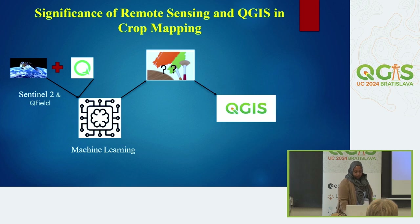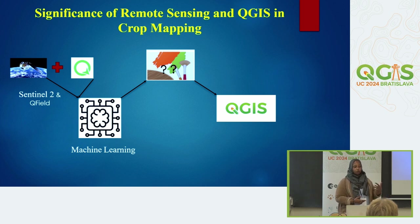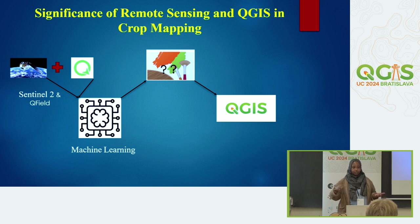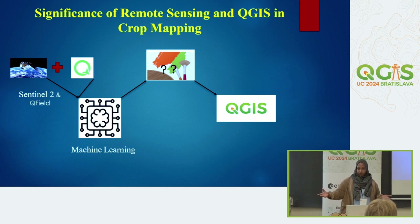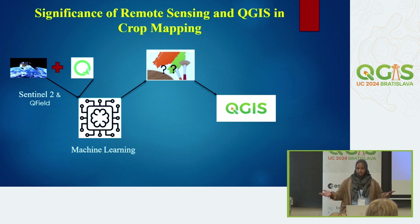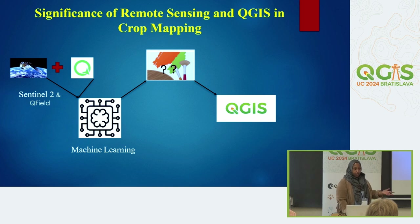I used QGIS for visualization of the data and further analysis, and also for validation. I had another remote sensing-derived product from a different source to compare against, because I didn't have actual crop maps from the field. I had to use different remote sensing sources, and the validation involved uncertainties both ways, so I had to figure out a way to handle that.